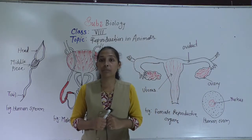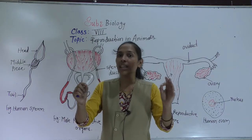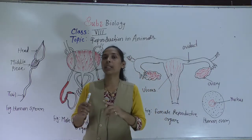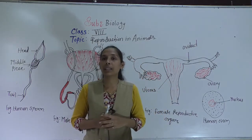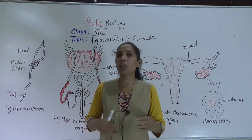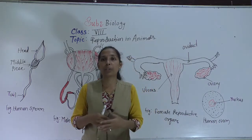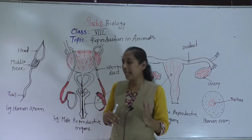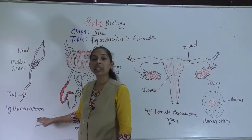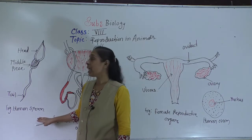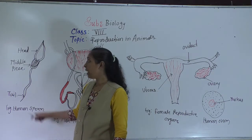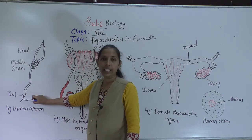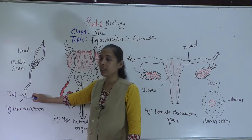The sperm is a single cell, but it contains all the usual components of a cell. Mainly, sperms have three parts: the head, the middle piece, and the tail.